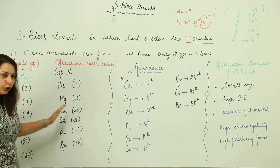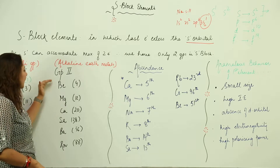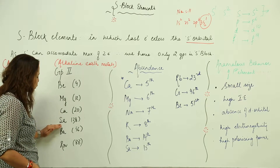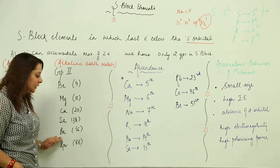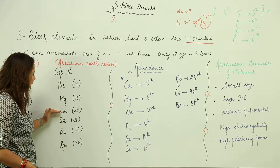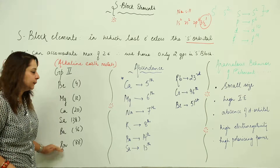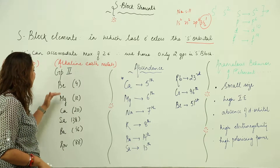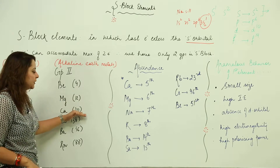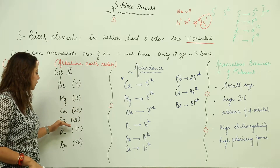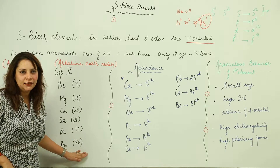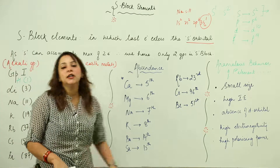Group 2 elements are placed next to Group 1. They are beryllium, magnesium, calcium, strontium, barium, and radium, with atomic numbers 4, 12, 20, 38, 56, and 88 respectively.